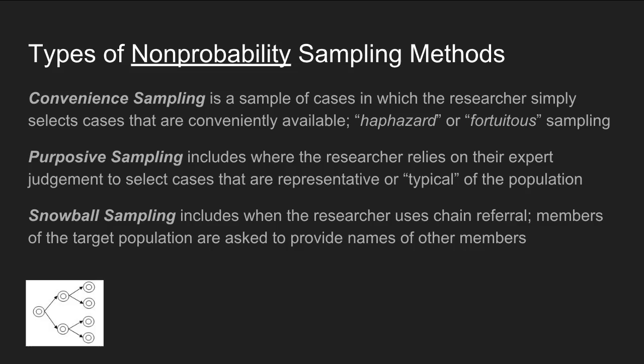Non-probability sampling is different from random sampling. In non-probability sampling, the researcher selects cases in ways other than random. Methods include convenience sampling — also called haphazard or fortuitous sampling — where cases are selected simply because they are conveniently available. Purposive sampling relies on expert judgment to select cases representative of the population. Snowball sampling uses a system of chain referral, where members of the target population are asked to provide names of other members for the researcher to contact.